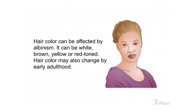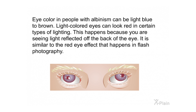Hair color can be affected by albinism — it can be white, brown, yellow, or red-toned, and may also change by early adulthood. Eye color in people with albinism can range from light blue to brown. Light-colored eyes can look red in certain types of lighting because you are seeing light reflected off the back of the eye — similar to the red-eye effect in flash photography.